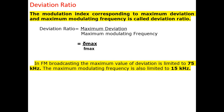Another important terminology in FM is the deviation ratio. The modulation index corresponding to maximum deviation and maximum modulating frequency is called the deviation ratio, given by Δ_max / FM_max. In FM broadcasting, the maximum value of deviation is limited to 75 kilohertz, and the maximum modulating frequency is also limited to 15 kilohertz.